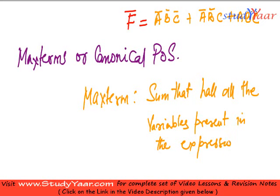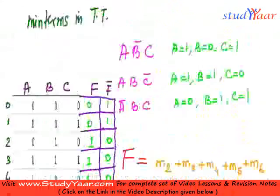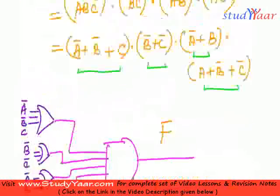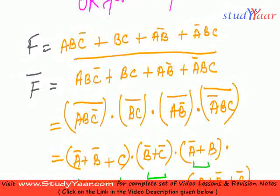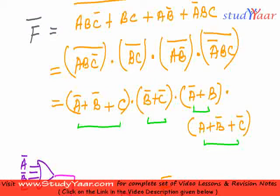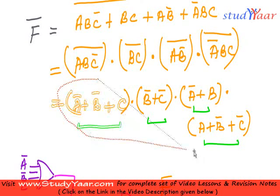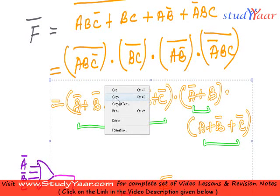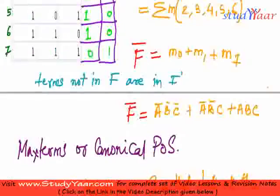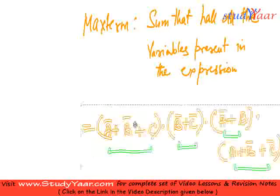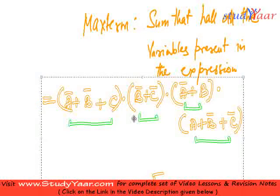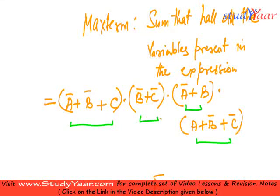So let's look at what we have done in POS and find out if that is a canonical POS. This is my F bar, right? I have reached till here. So I am just going to copy this. I am going to paste it right here. So what is this? This is F bar and it is something like this.